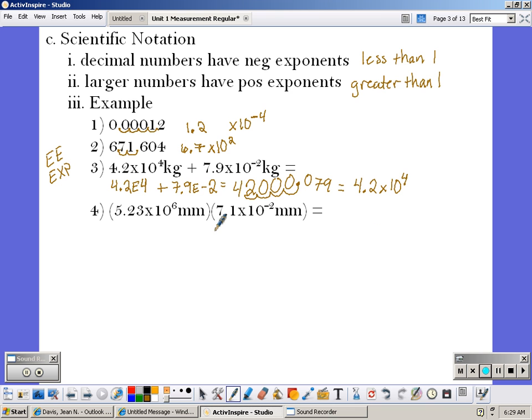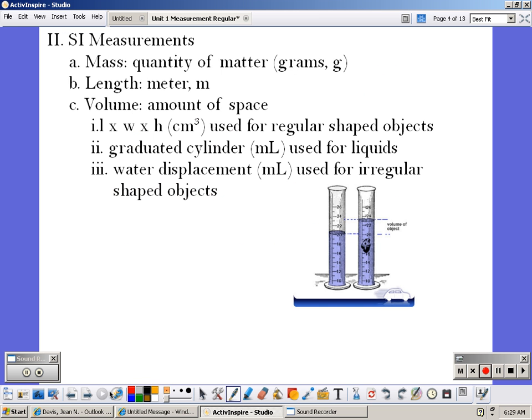In the next example, we're multiplying. So we would say 5.23, our special button, six, times 7.1 special button, negative two. Again, our calculator gives us a rather large number. Rounding to two numbers, we would say 3.7 times ten. The number is greater than one, so my exponent is going to be positive. And I would have to move the decimal one, two, three, four, five times.